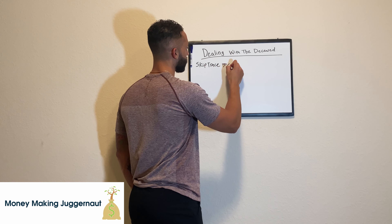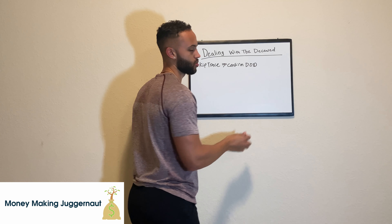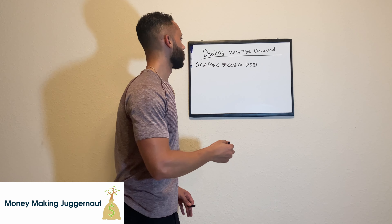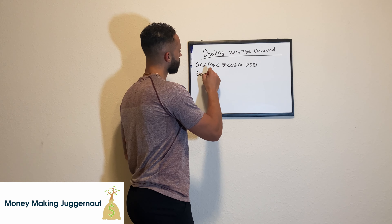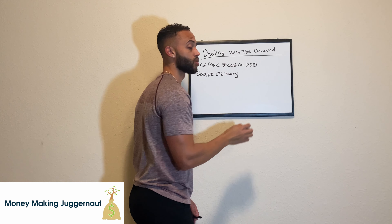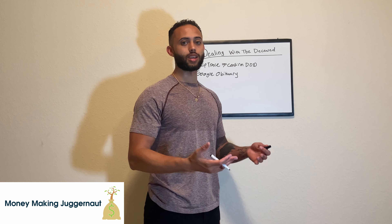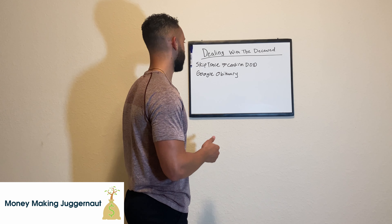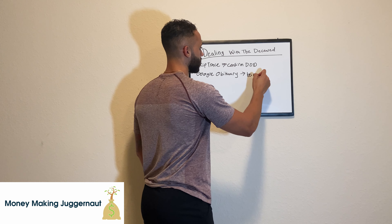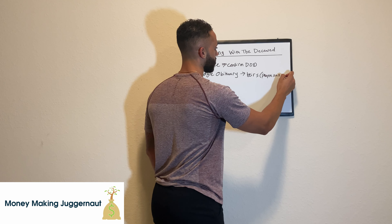Then you're going to confirm the date of death. Most skip tracing websites will tell you when that person died. But also what you want to do is Google that person's obituary. An obituary is usually just a message when somebody passes away that talks about their life and says who is remaining in their life — the family members that are still alive.